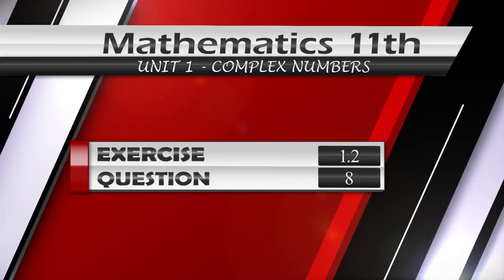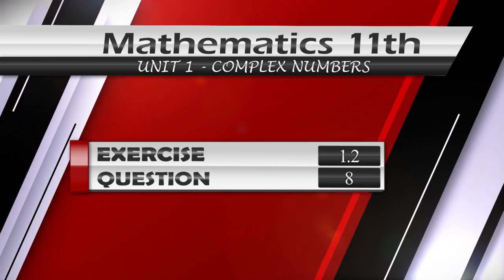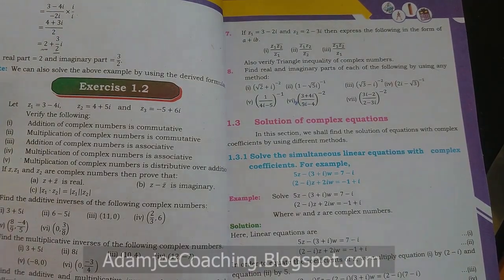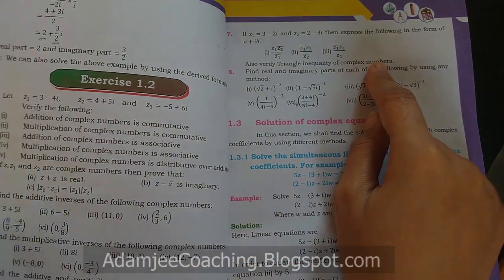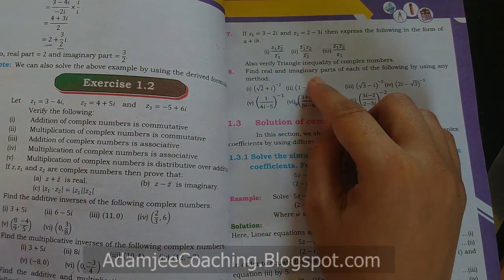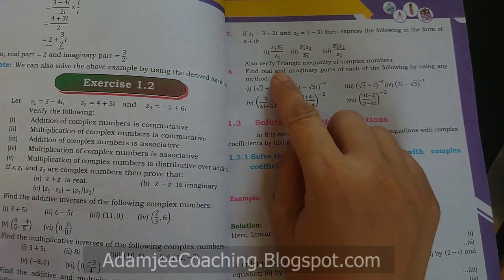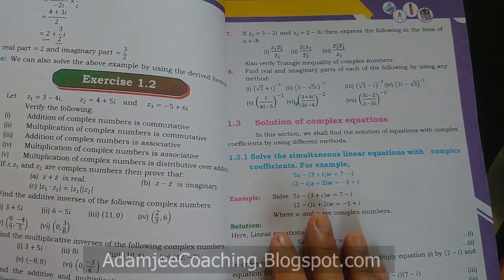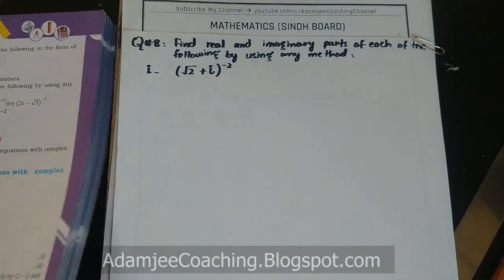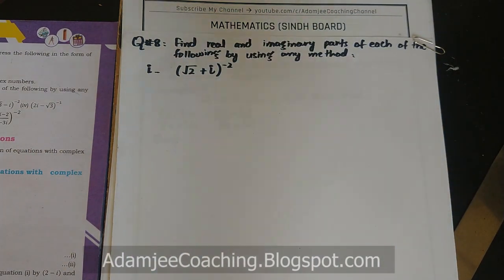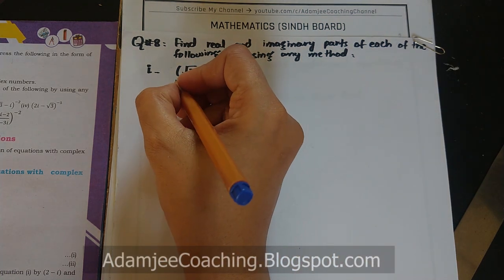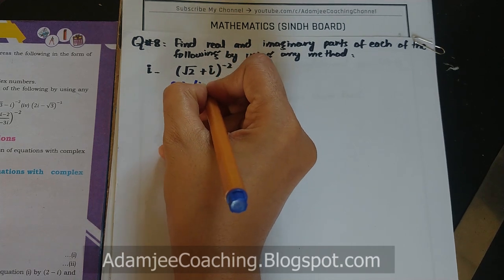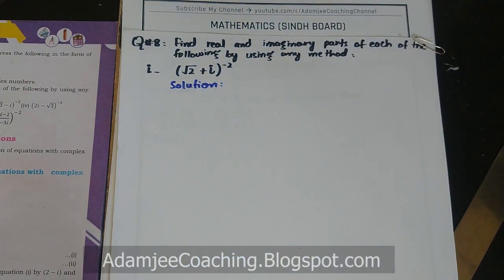Assalamualaikum. Exercise 1.2, Question No. 8: Find real and imaginary part of each of the following by using any method. Real and imaginary part find करना है। You can use any method - formula or rationalization. Some questions I will do with formula and some without. If there is rationalization, I will use that.